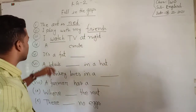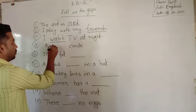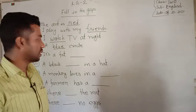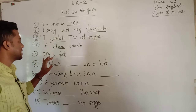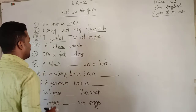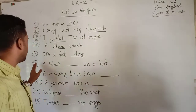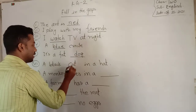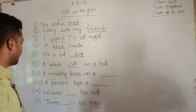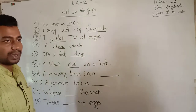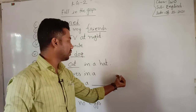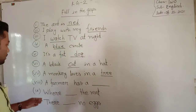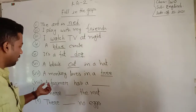It's a blue circle. It's a pet dog. A black cat in a head. A monkey lives in a tree — t-r-e-e. A farmer has a goose.